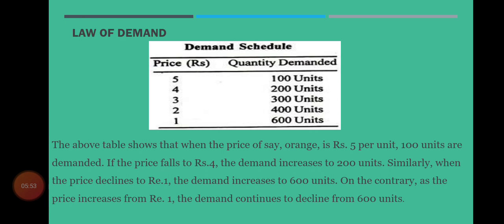The above table shows that when the price — for example the price of the orange — is rupees 5 per unit, only 100 units are demanded. And if there is a fall in the price, for example the price falls to rupees 4, the demand increases to 200 units. Similarly, when the price declines and continuously declines until it reaches the price of rupee 1, the demand increases and continuously increases up to 600 units.